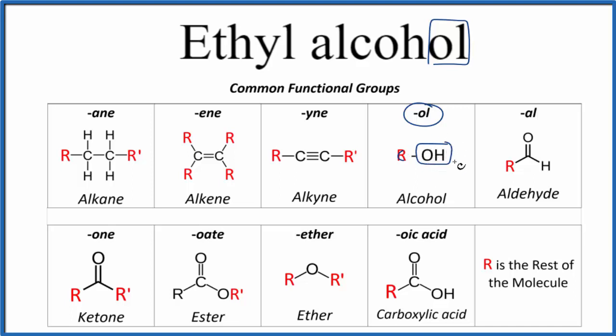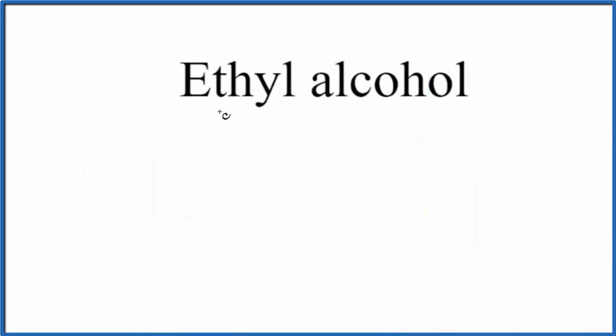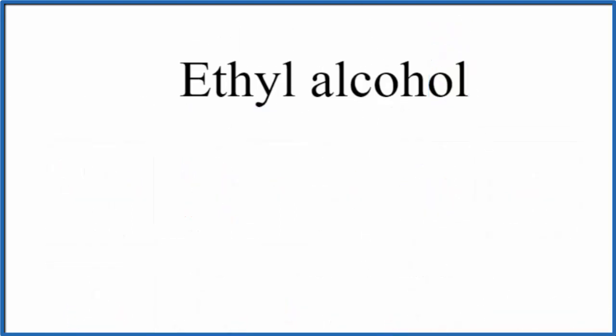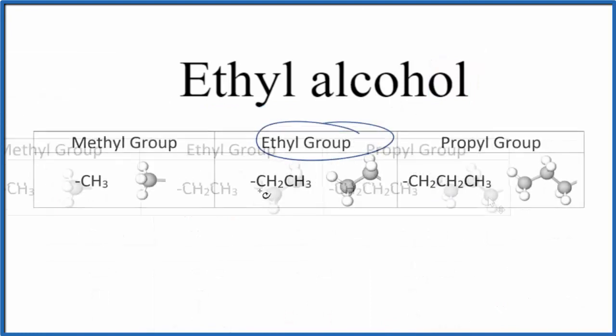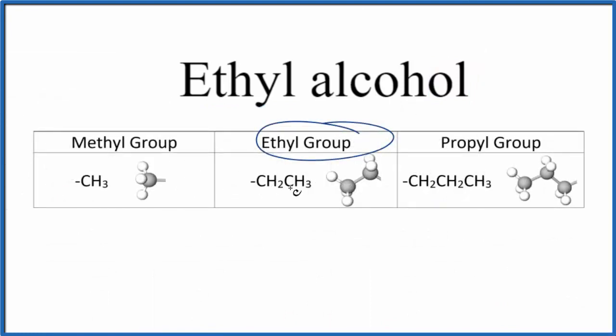So we know we have this OH group, this alcohol functional group in ethyl alcohol. We also know a lot from the word ethyl. If we look at ethyl here, we have a carbon with two hydrogens and then another carbon with three hydrogens. So our carbons are right here bonded together and they have the hydrogens around. This is our ethyl group.